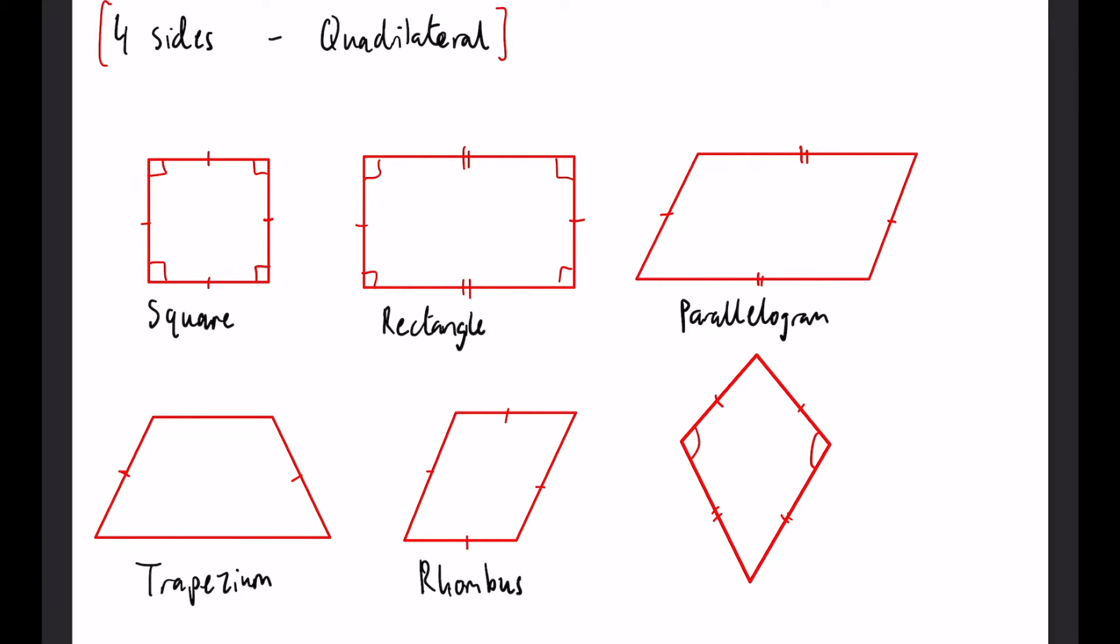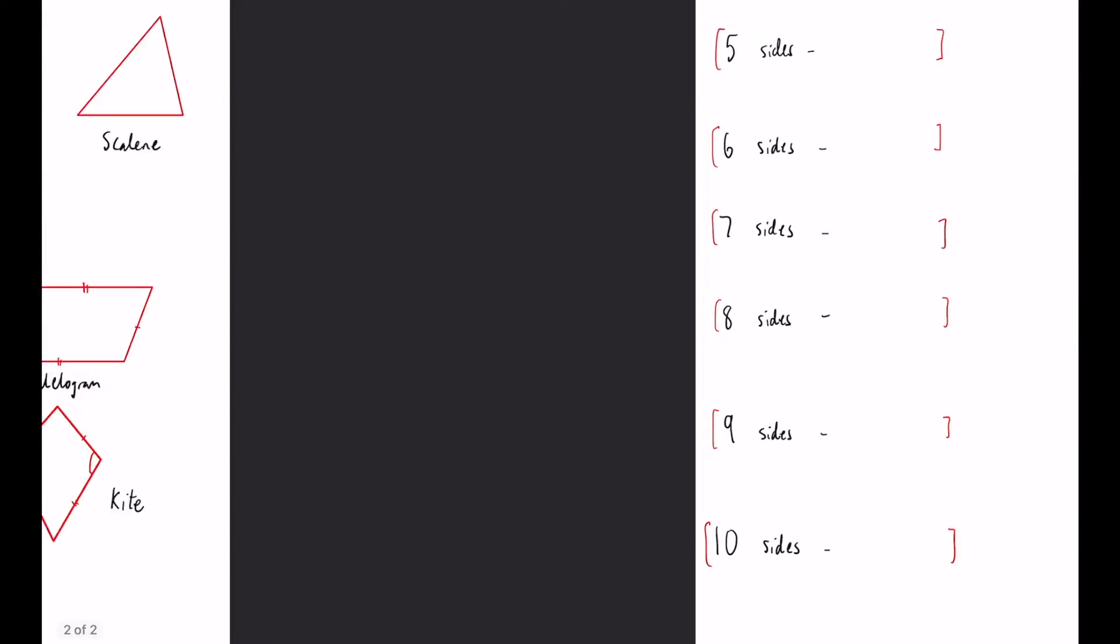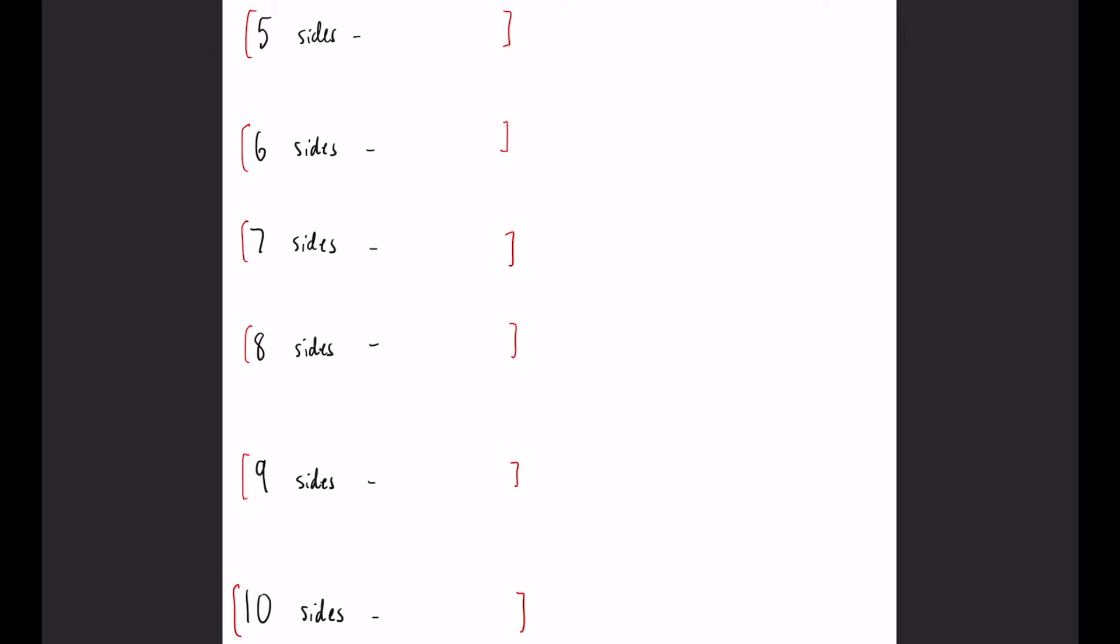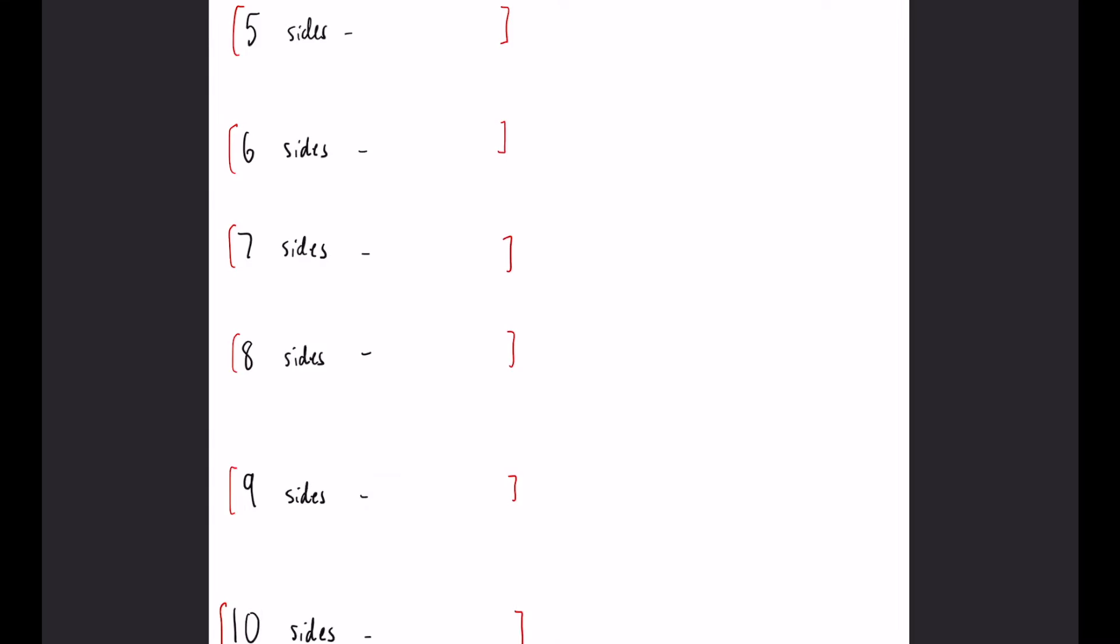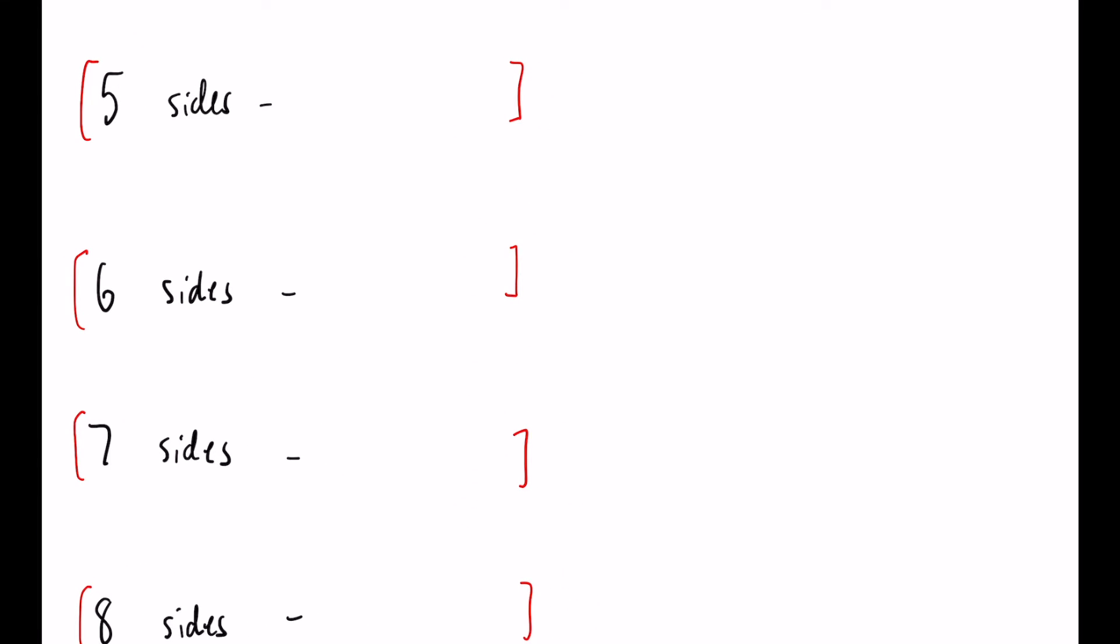Finally we have a kite. A kite has these two sides the same and these two sides are also the same. I'm not going to attempt to draw these because it won't end well, but a five-sided shape, you should at least know the name of it, is called a pentagon. A six-sided shape is a hexagon.